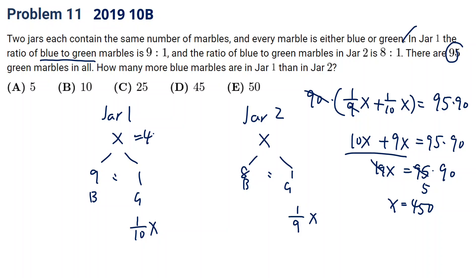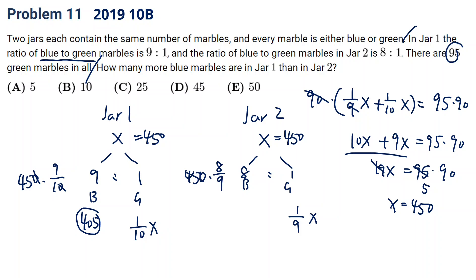So each jar has 450 marbles. The question is, how many more blue marbles are in jar 1 than jar 2? Blue marbles in jar 1 will be 450 times 9/10, which is 405. And in jar 2 it will be 450 times 8/9, which is 400. So the difference will be 5. You can see here fractions are involved, so the calculation is a little harder. But this is an essential skill for grade 9 and 10 math. I hope you enjoy this video and see you in the next lecture.